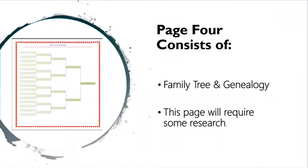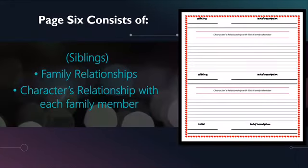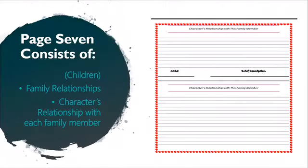Page four consists of family tree and genealogy — this page will require some research. Page five consists of the mother and father family relationships and the character's relationship with each family member. Page six consists of siblings' family relationships and the character's relationship with each family member.